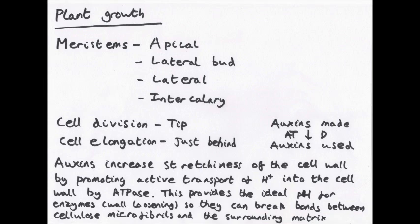Auxins work by increasing the stretchiness of the cell wall. They promote active transport of protons or hydrogen ions into the cell wall via ATPase, an enzyme found on the plasma membrane. This produces a very low pH — very acidic conditions — which is perfect for enzymes that cause wall loosening. These enzymes break bonds between cellulose microfibrils and the surrounding matrix, making the walls less rigid and allowing them to expand as the cell takes in water. Water is taken in and the cell expands.